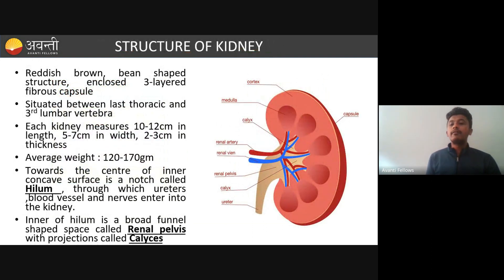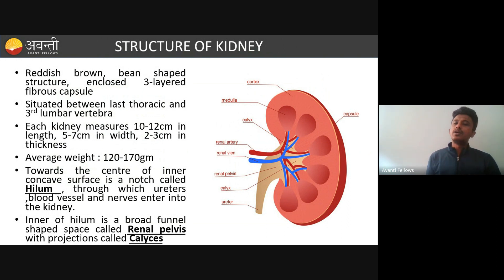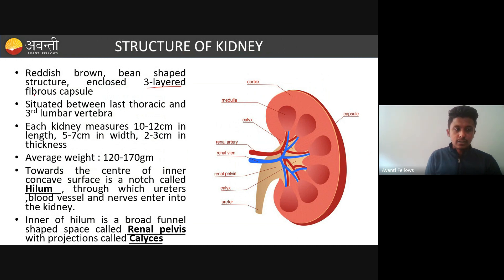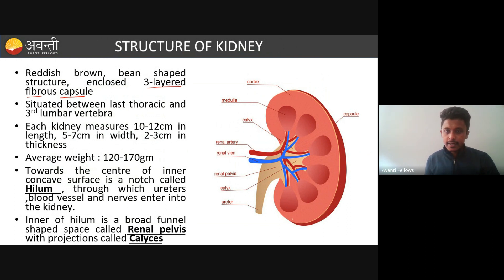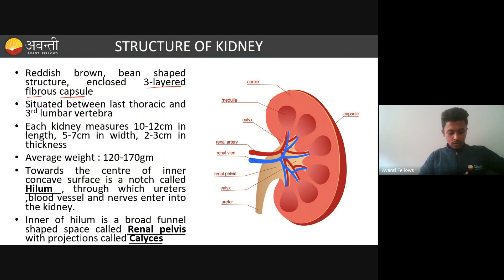The kidney is a bean-shaped structure — it looks like rajma or kidney beans. It is enclosed in three layers called a fibrous capsule. The kidney is located between the last thoracic vertebra and the third lumbar vertebra. Lumbar vertebrae are the ones just below the ribcage. The kidneys are attached to the dorsal wall of the body.